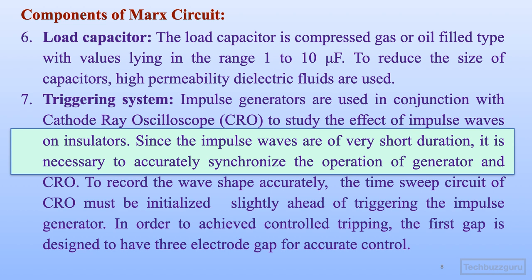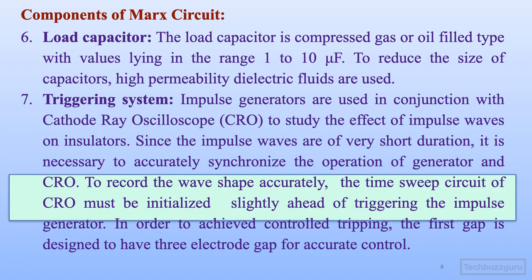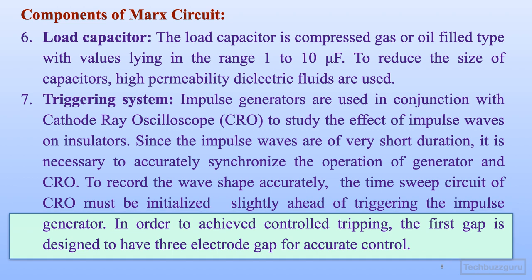Impulse waves are of very short duration, and to accurately study them, synchronization of the CRO with the impulse generator must be achieved using a time sweep circuit. The time sweep circuit of the CRO is initialized slightly ahead of the moment when the impulse generator is triggered, to record the wave shape accurately. To achieve controlled tripping, the first spark gap is usually designed to have three electrodes, also called a trigger-tron type of arrangement.